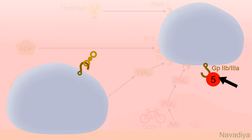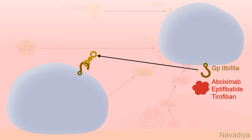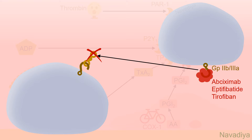Now the final group: GP2B3A inhibitors. We saw that this receptor attaches platelets to other platelets. Abciximab, eptifibatide, and tirofiban block this receptor, so platelets cannot attach to other platelets and aggregation is prevented. So these were all the anti-platelet drugs and their mechanisms of action.